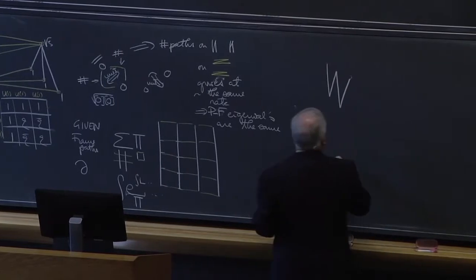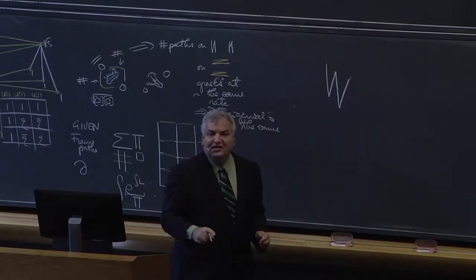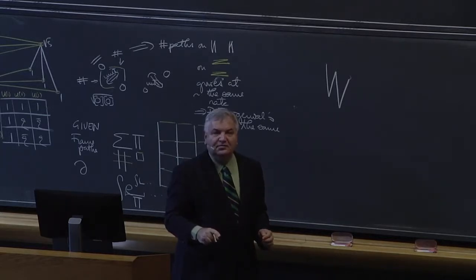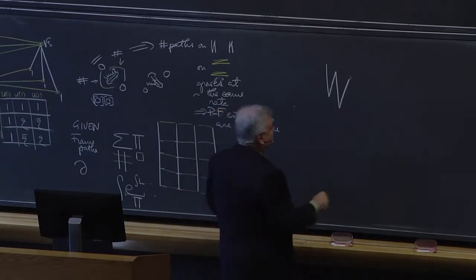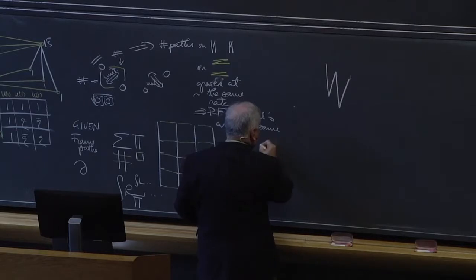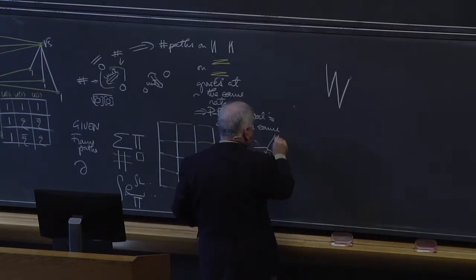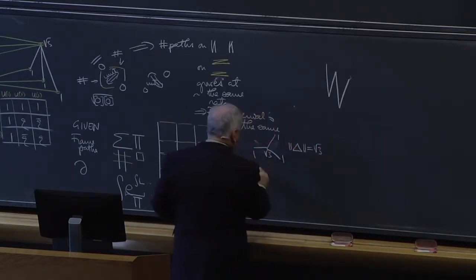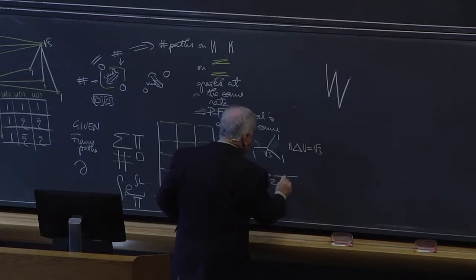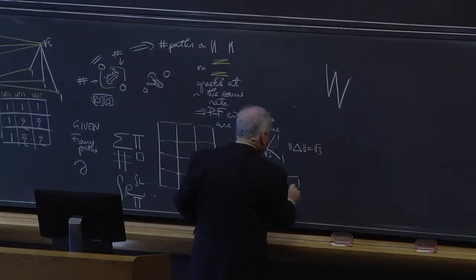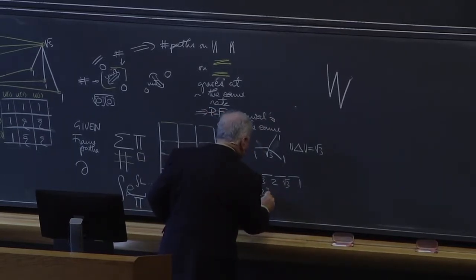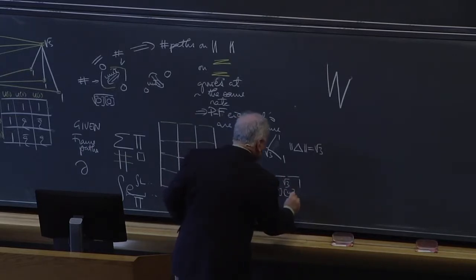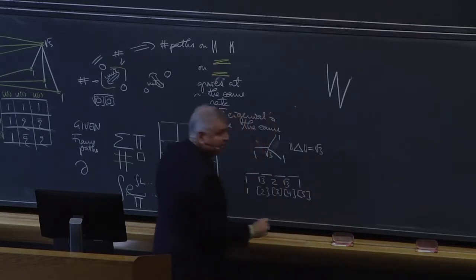The only other graph of the same norm as D4 is A5. The two graphs of norm √3 are D4 — which looks like this with Perron-Frobenius eigenvectors 1, √3, 1, 1 — and A5, which has eigenvectors 1, √3, 2, √3, 1, corresponding to quantum 1 through quantum 5.